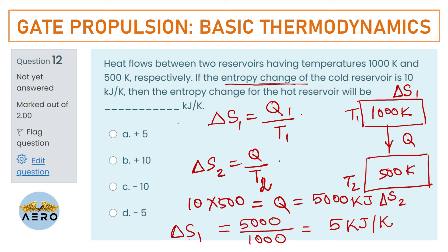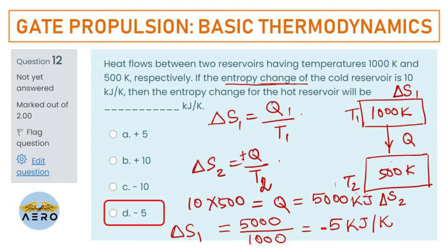Looking at the options — plus 5 or minus 5. For the cold reservoir at 500 K, heat is being added, so the sign is positive. But for the hot reservoir at 1000 K, heat is leaving, so the sign is negative. Therefore ΔS₁ = −5 kJ/K.